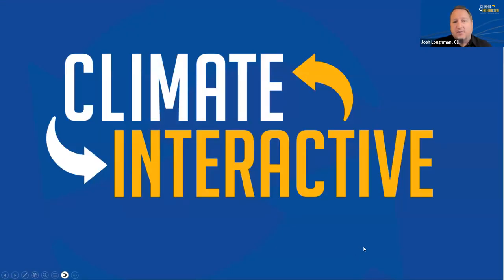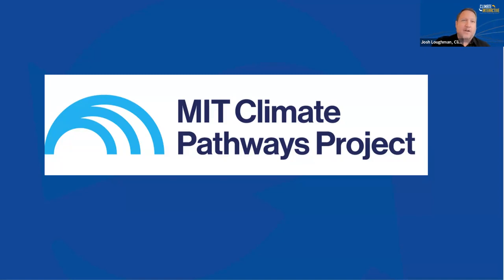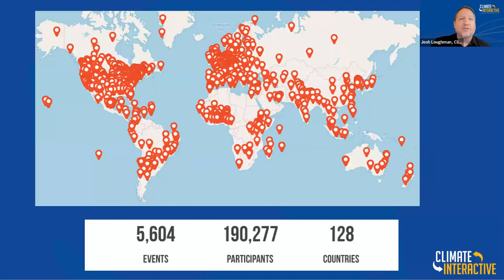Climate Interactive is an energy and climate policy think tank. We work closely with our partners at MIT Climate Pathways Project, the MIT Sloan School, and we work with hundreds of our ECAs around the world to engage all kinds of audiences — from students and activists to decision makers in business and government — to experiment with a wide range of climate policies and test their mental models on which of those actions might have the greatest effect. This is just an example of the over 5,000 events and hundreds of thousands of participants in 128 countries that we do workshops with.